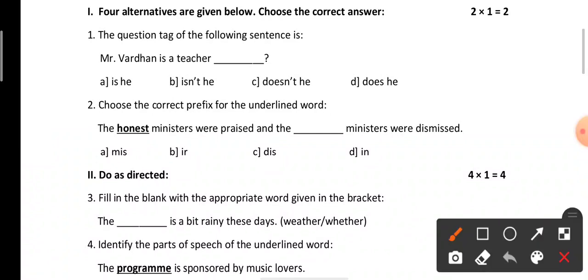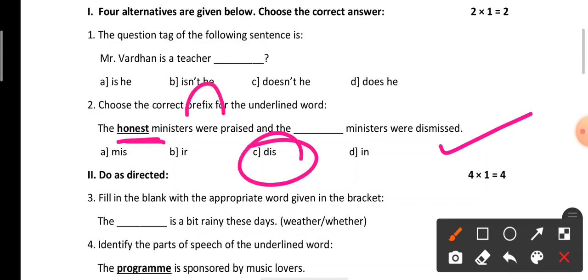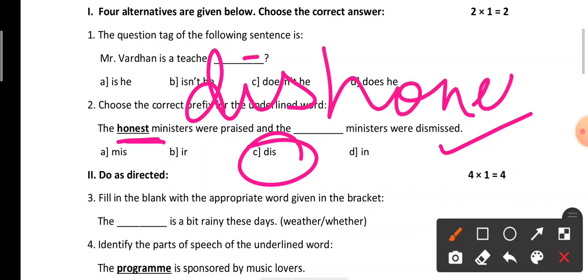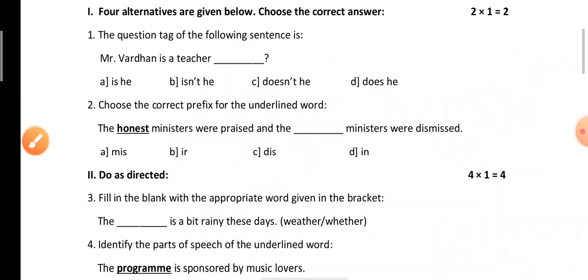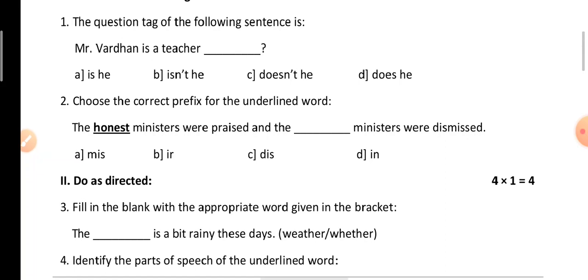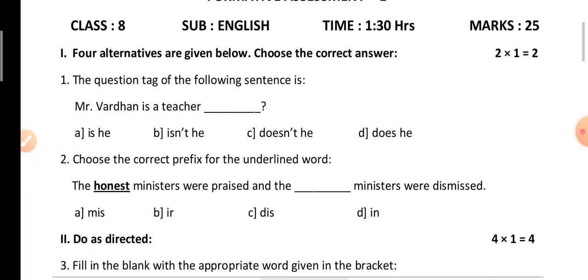The second question: choose the correct prefix for the underlined word. By choosing the prefix we have to make the opposite of the word 'honest'. The sentence is: 'The honest ministers were praised and the ___ ministers were dismissed.' The correct prefix for honest is 'dis', making it 'dishonest'. So: the honest ministers were praised and the dishonest ministers were dismissed.